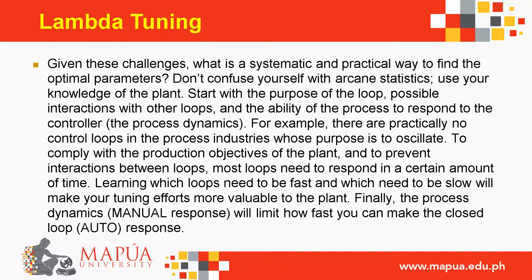Given these challenges, what is a systematic and practical way to find the optimal parameters? Use your knowledge of the plant: start with the purpose of the loop, possible interactions with other loops, and the ability of the process to respond to the controller. There are practically no control loops whose purpose is to oscillate. Most loops need to respond in a certain amount of time — knowing which loops need to be fast and which slow makes tuning more valuable. Process dynamics will ultimately limit how fast the closed loop response can be.